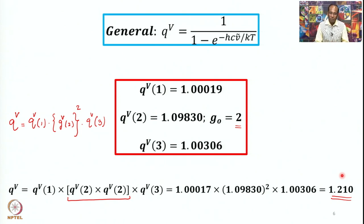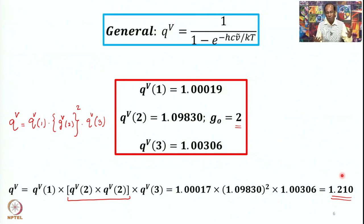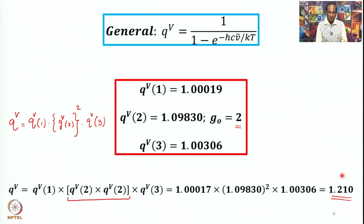So translational, rotational, vibrational — we have discussed these in order of their magnitude. The vibrational contribution in general is not expected to be much different from 1, unless temperatures are extremely high. The next partition function we should discuss is the electronic partition function, and we will see where it falls in this ordering of values — but that we will discuss in the next lecture. Thank you very much.